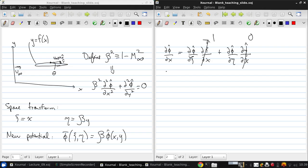We can do the same thing for the y derivative, and we'll get that d xi dy is 0 and d eta dy is beta.